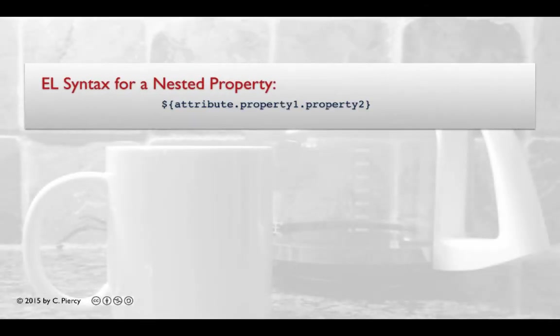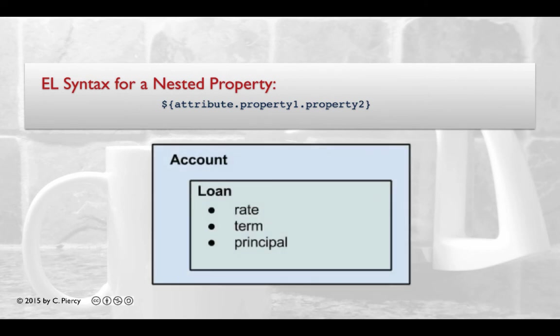Often, one of the properties of a stored object is another object. For example, imagine an account JavaBean that includes as a field a loan JavaBean object. We might wish to access one of the loan's properties, such as the interest rate.